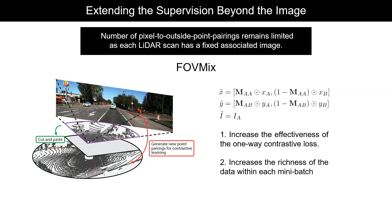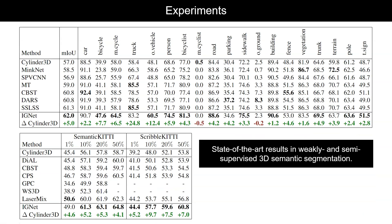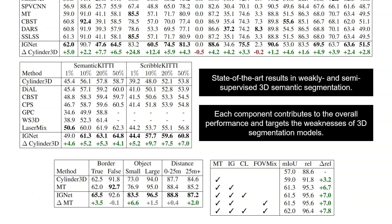Combining all proposed components, IGNet claims state-of-the-art results in both weakly and semi-supervised 3D semantic segmentation. Furthermore, we show ablation studies demonstrating the effectiveness of each component individually and the effectiveness of the image guidance in targeting the common weaknesses of 3D semantic segmentation models.